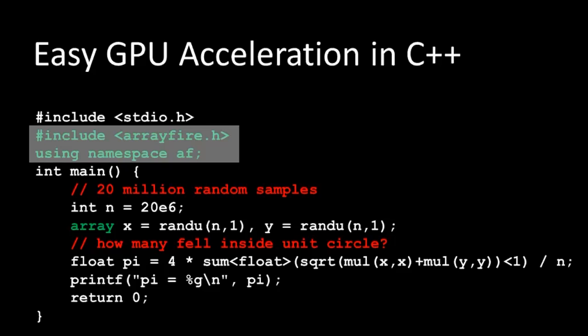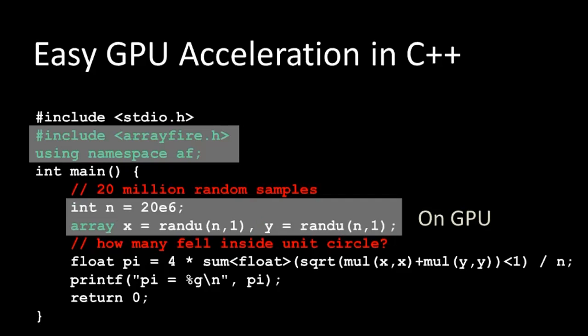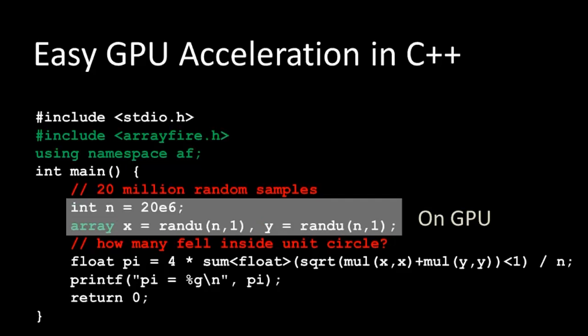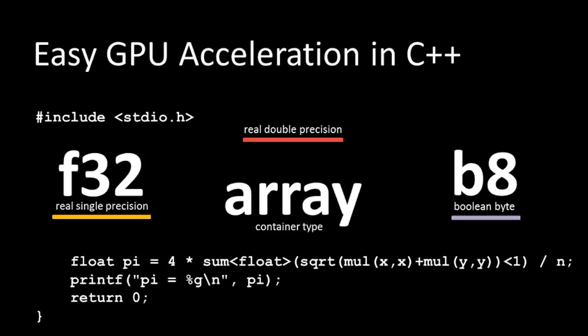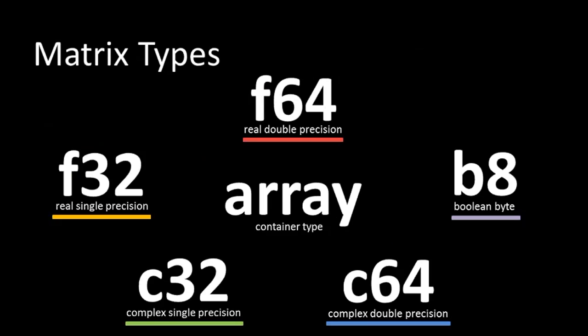You simply include the header file at the top, then declare a variable as an array, which sends that variable to the GPU. Here we're declaring that X and Y are both vectors of random numbers generated on the GPU. ArrayFire supports an array container type as the central type. Those containers can be of double precision, Boolean, complex, or single precision — all standard data types that GPUs support are supported within ArrayFire.